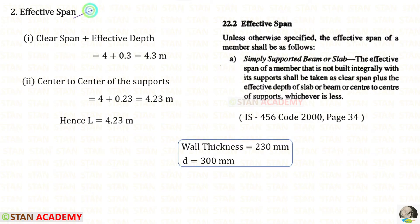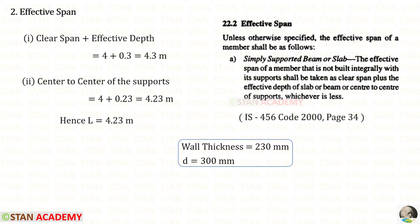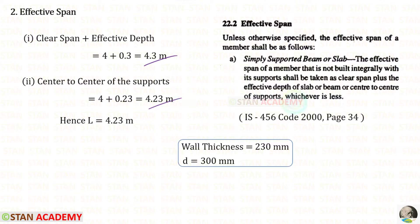Now we are going to find the effective span. From codebook page number 34, the effective span of a beam shall be taken as the lesser of: clear span plus effective depth, or center to center of supports. The wall thickness given is 0.23 meter and the effective depth is 0.3 meter. Clear span plus effective depth gives 4.3 meter. Center to center of supports gives 4.23 meter. We take the minimum value, so the effective span is 4.23 meter.